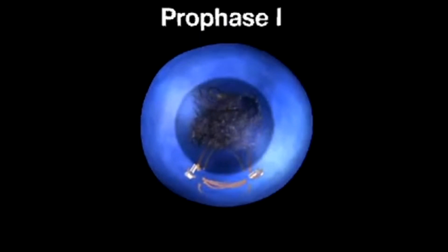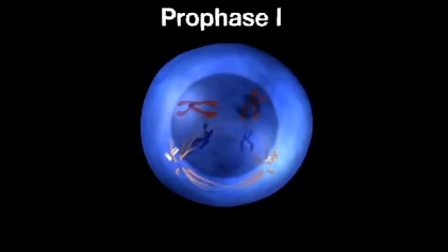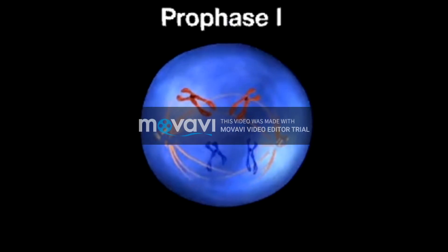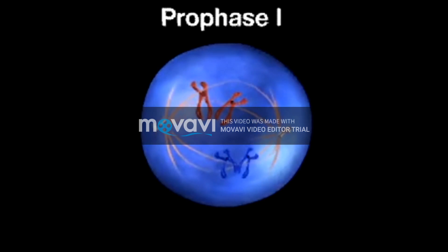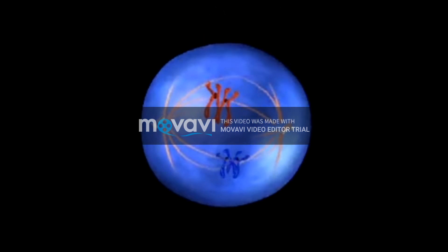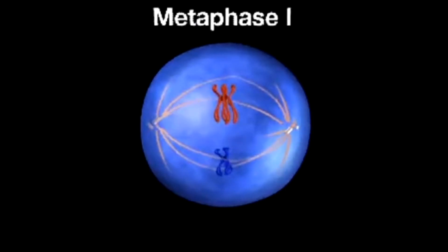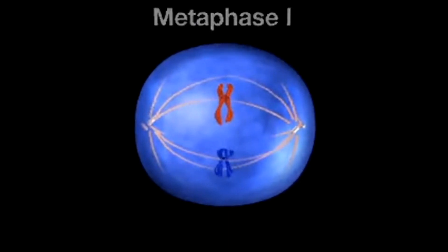During prophase I, the chromosomes coil up and a spindle forms. Then, in a step unique to meiosis, each pair of homologous chromosomes comes together to form a tetrad. During metaphase I, tetrads line up on the equator of the spindle.